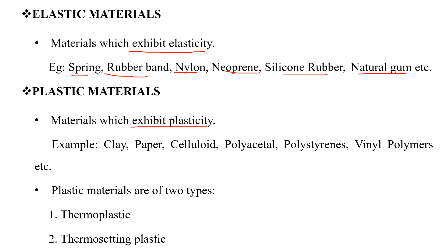We see the plastic materials in the video. We see clay, paper, celluloid, polyacetylene, polyesterase, polystyrene, polymers — these are plastic materials in examples.